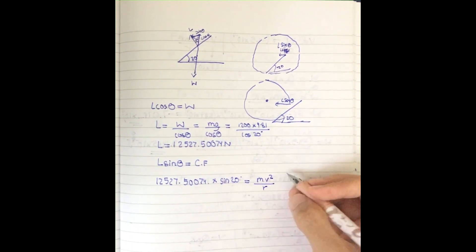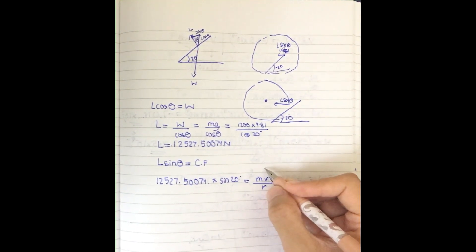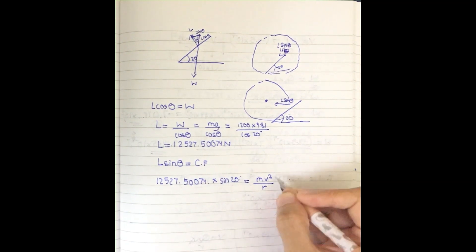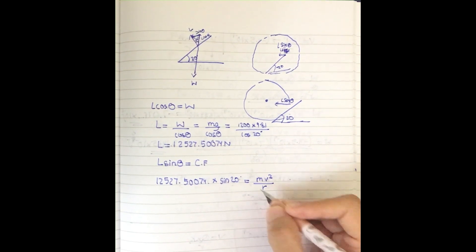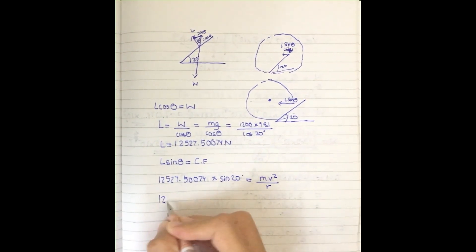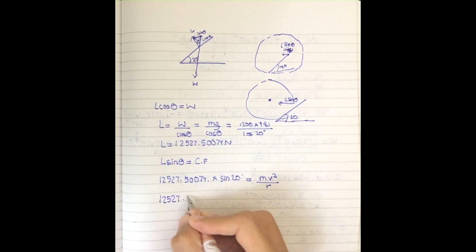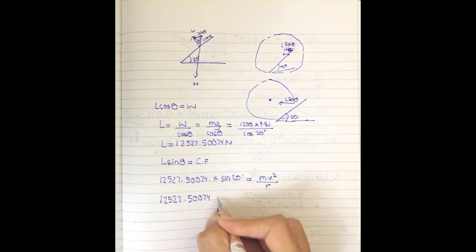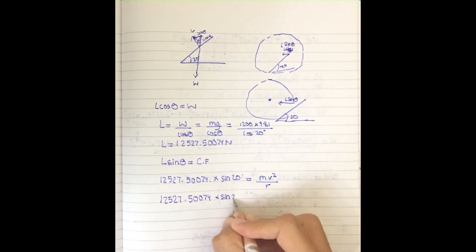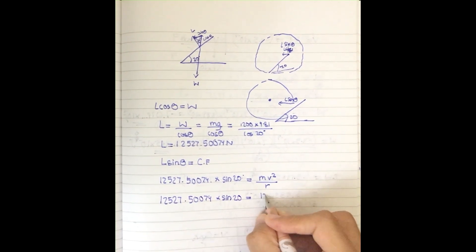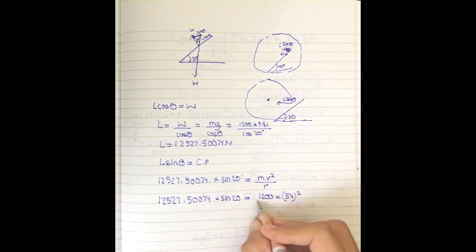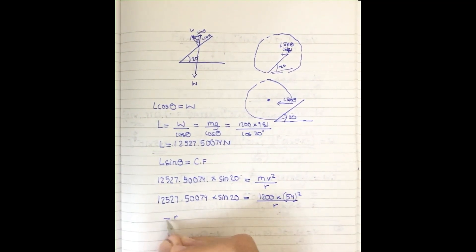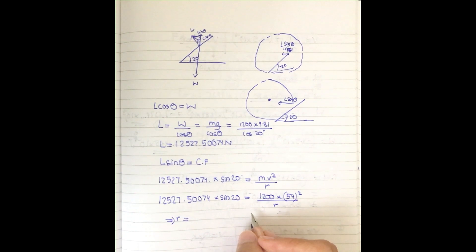Setting up the equation: 12,527.5 × sin(20°) = mv²/r. We know mass M = 1200 kg, speed V = 54 m/s, and we need to find the radius r. So: 12,527.5 × sin(20°) = 1200 × 54² / r.